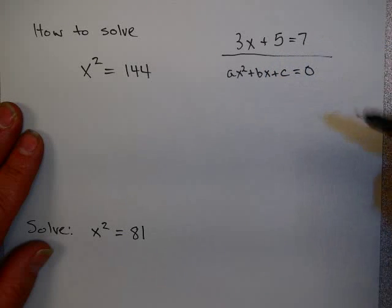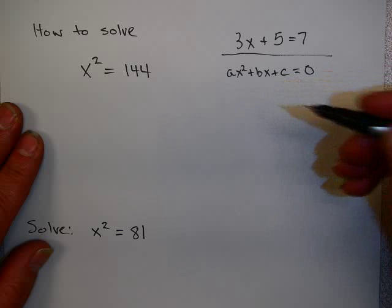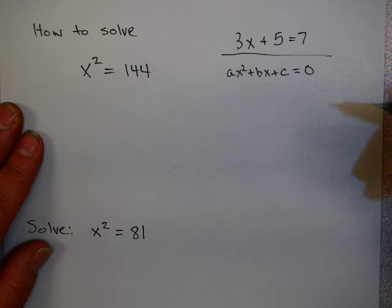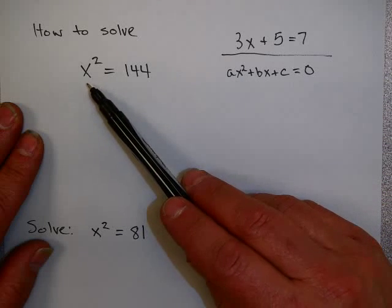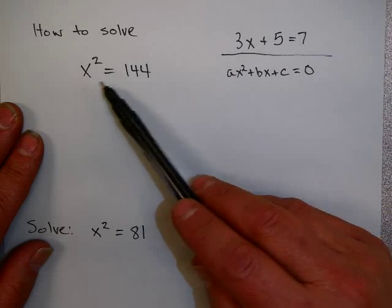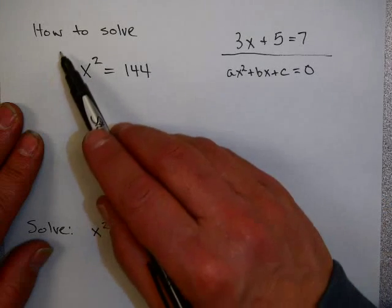In this video, we're going to talk about a different way to solve certain quadratic equations. And we're going to solve them using something called the square root property. Basically, if you can isolate the x squared term, you can use this property. Take a look at this example.